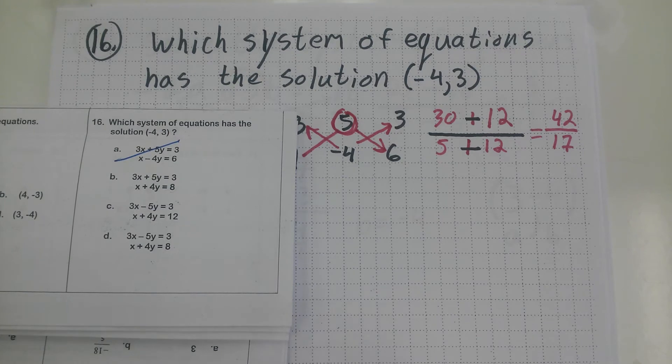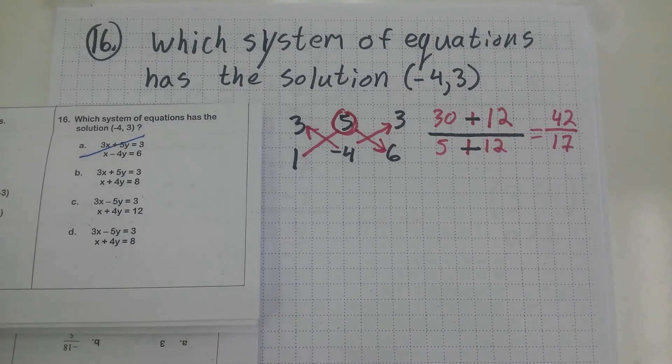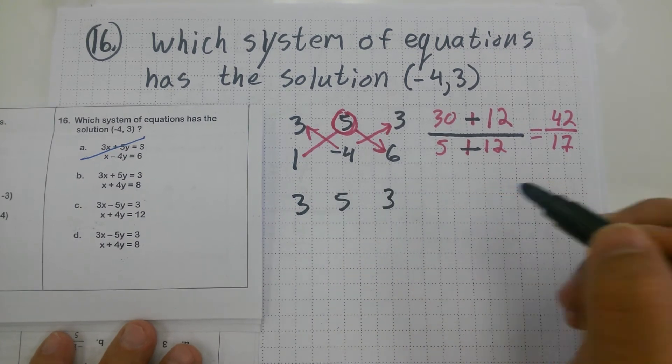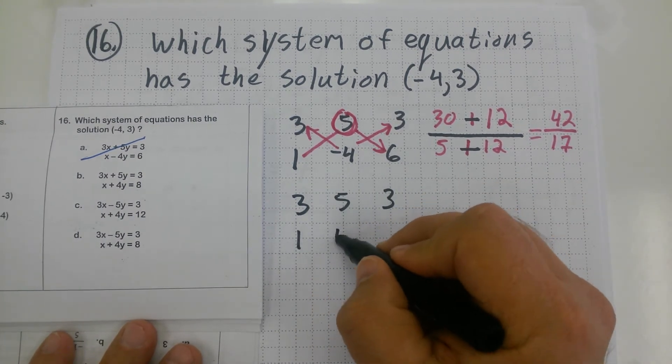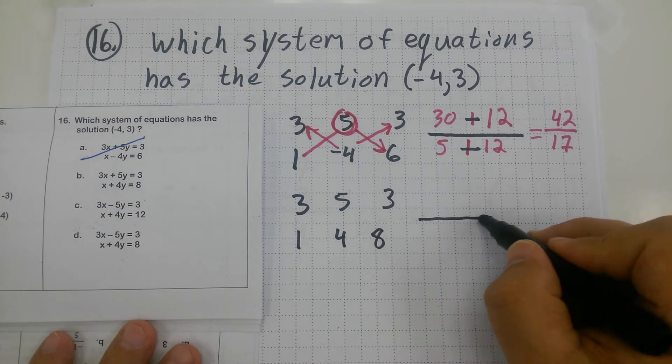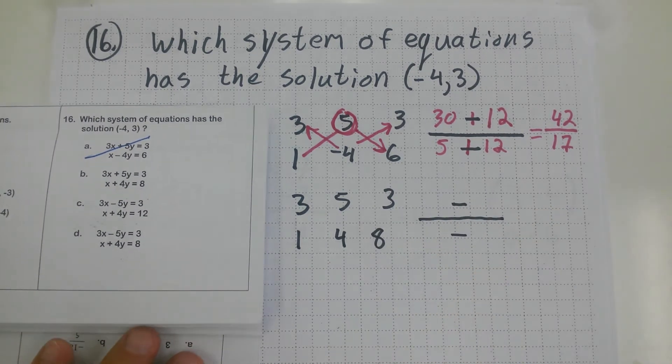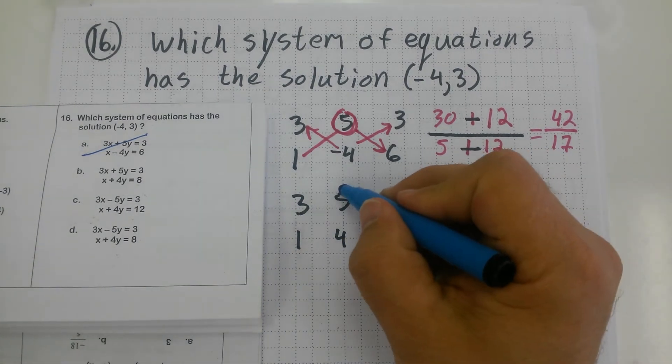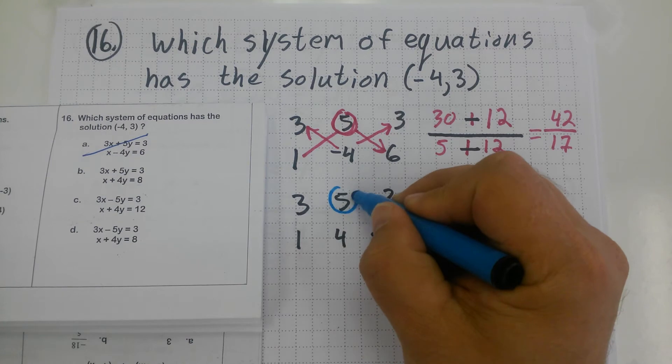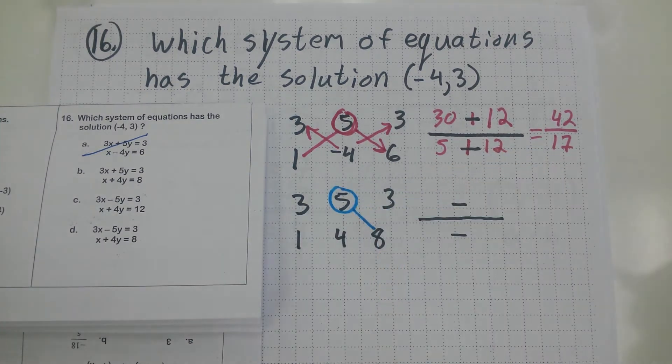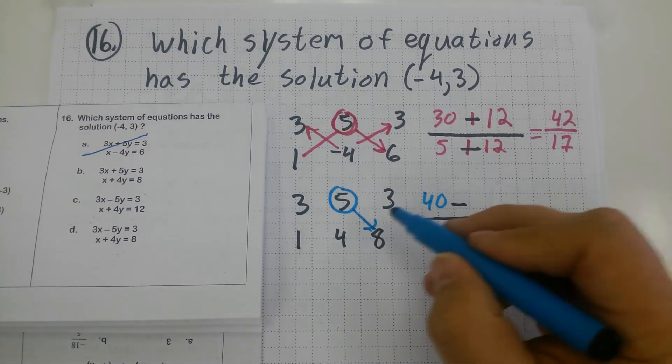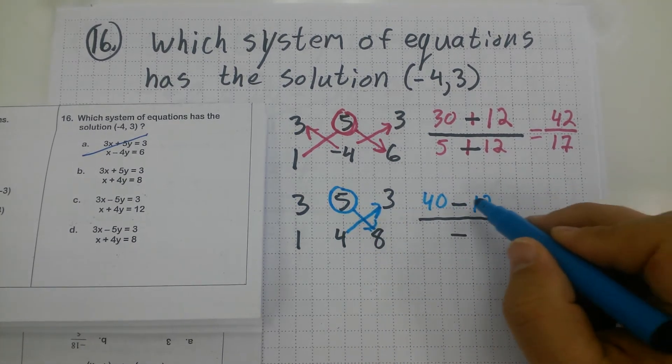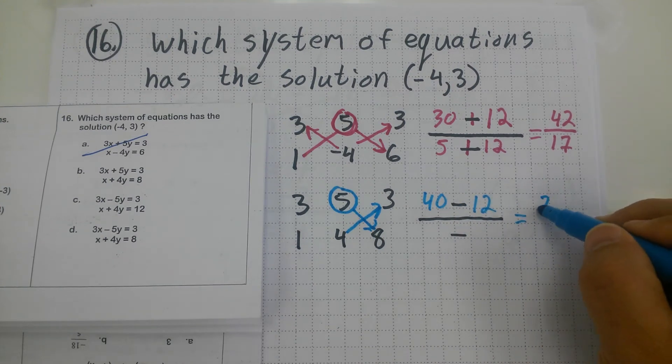And notice all I'm going to do is write down the coefficients. So for choice B, I'm going to write down 3, 5, and 3, 1, 4, and 8. I'm going to set up my Kramer's Rule template. I'm going to circle that 5. That's my pivot. And I do 5 times 8. Well, that's going to give me a 40. And I do 4 times 3. That's going to give me 12. I think 40 minus 12, that's 28.